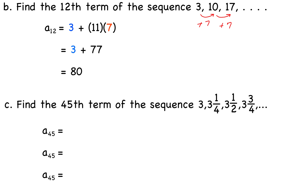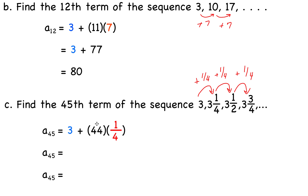Find the 45th term of the sequence 3, 3 and 1/4, 3 and 1/2, 3 and 3/4. From each term to the next we add 1/4, so the common difference is 1/4 and a sub 1 is 3. A sub 45 equals 3 plus 45 minus 1, which is 44, times 1/4. Since 44 times 1/4 simplifies to 11, we get 3 plus 11 equals 14. So a sub 45 is 14.